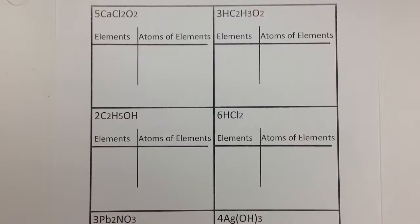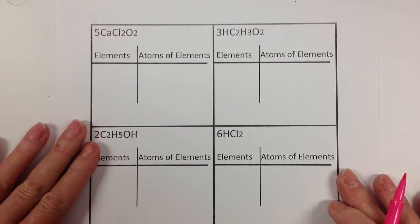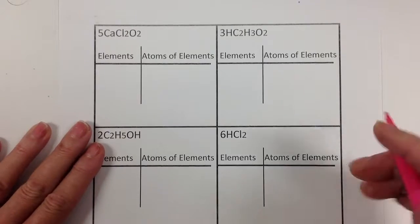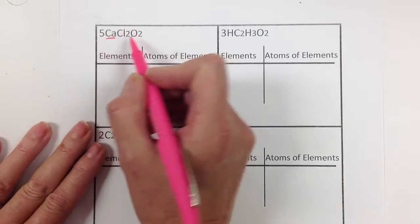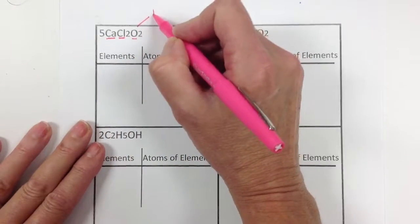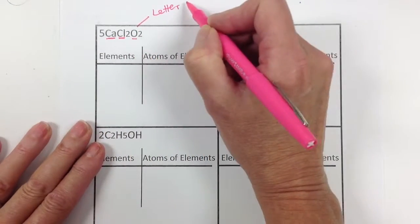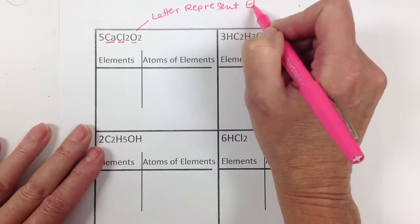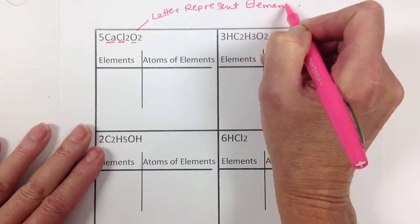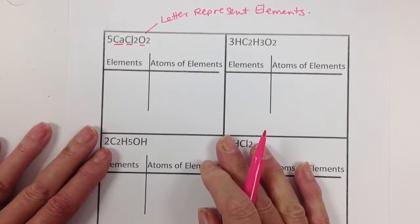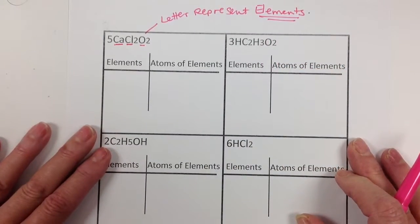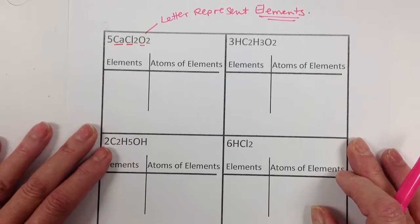Alright, this is going to be a quick review on counting elements and counting atoms or analyzing a chemical formula. First thing to remember is the letters here represent what? The letters represent the elements on the periodic table. So if it asks you specifically to look for elements in a chemical formula or equation, you're looking for those letters.